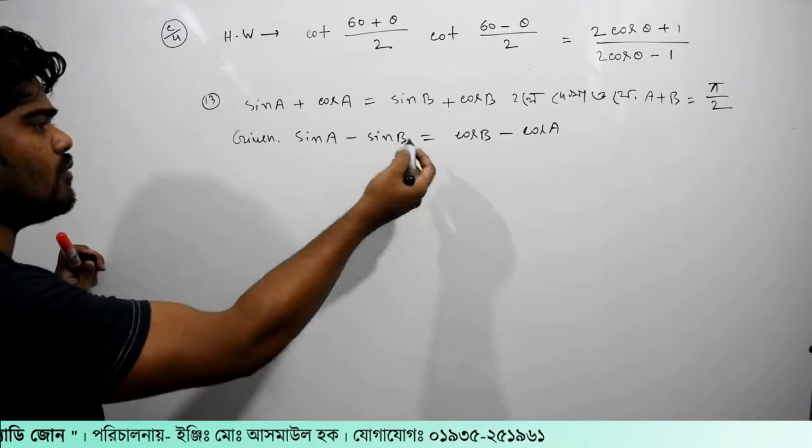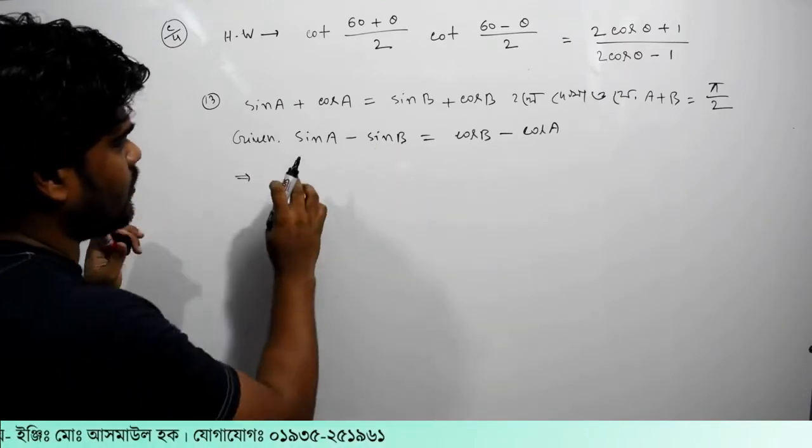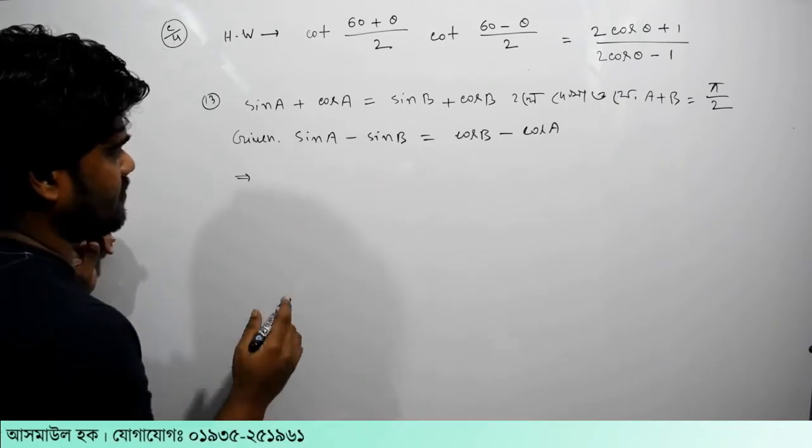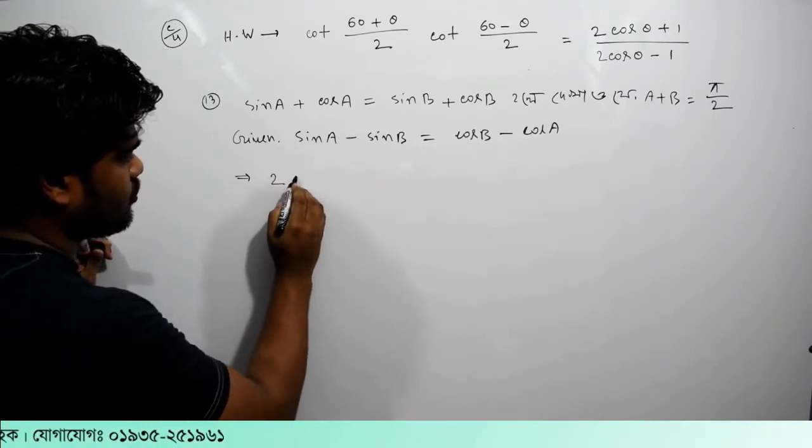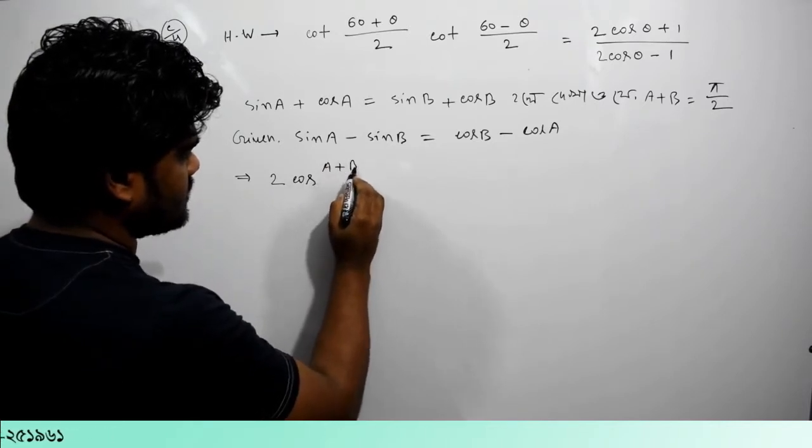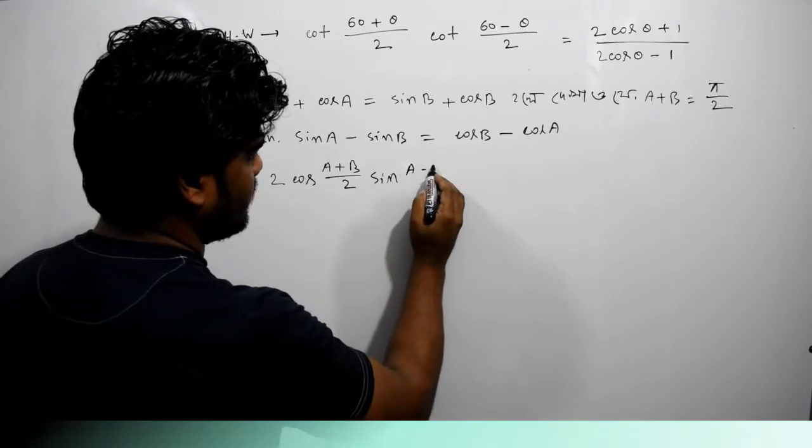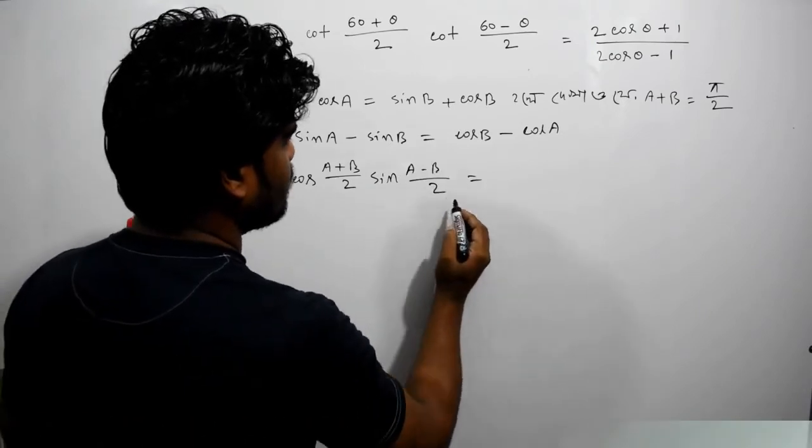So, we have to write the formula: sin A minus sin B. So, 2 cos(A plus B) by 2 sin(A minus B) by 2 is equal to.